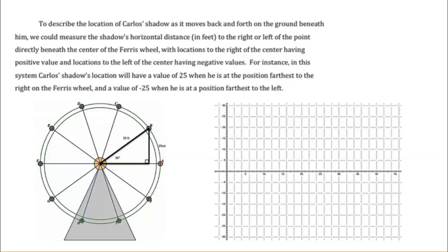To describe the location of Carlos's shadow as it moves back and forth on the ground beneath him, we can measure the shadow's horizontal distance in feet to the right or left of the point directly beneath the center of the Ferris wheel, with locations to the right having positive value and locations to the left having negative values. For instance, Carlos's shadow location will have a value of 25 when he is at the position farthest to the right, and negative 25 when he is at the position farthest to the left.